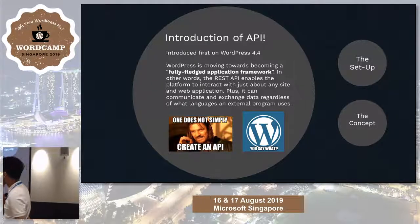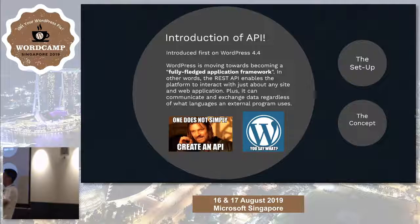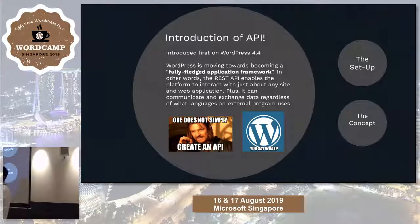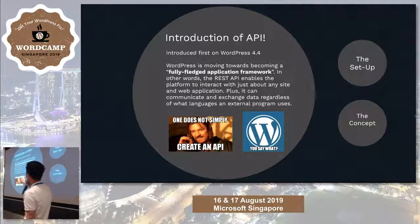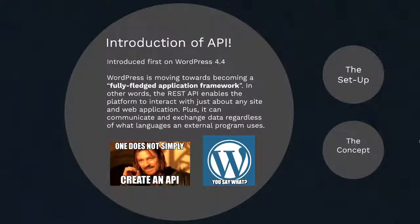Let's do the introduction for the API. Who here has been using WordPress since version 4.4? Are you reading the release notes or just doing update and done? The API functionality on WordPress was released on version 4.4 because they wanted to go in the direction of being a fully-fledged application framework — meaning it is not just a CMS or a simple blogging platform. They want it to be able to create applications, and for that you need APIs to supply the application. WordPress introduced the REST API.